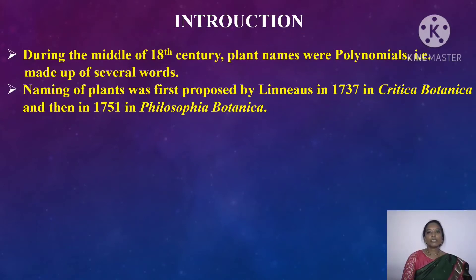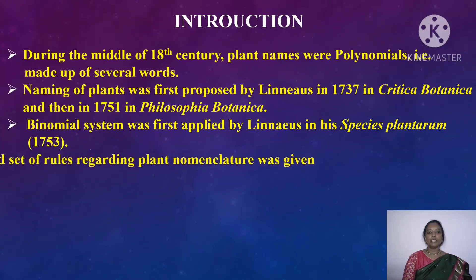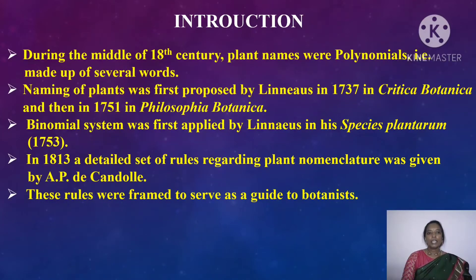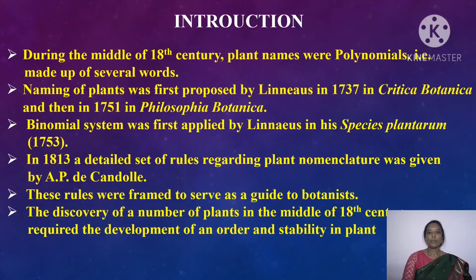The binomial system was first implemented by Carolus Linnaeus. The naming of plants was first proposed by Linnaeus in 1737 in Critica Botanica and then in 1751 in Philosophia Botanica. Later, the binomial system was first applied by Linnaeus in his Species Plantarum in 1753. In 1813, a detailed set of rules regarding plant nomenclature was given by A.P. de Candolle. Later, these rules were framed to serve as a guide to botanists.